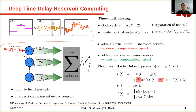Now to the dynamics of the systems. For every layer, we used a nonlinear Ikeda delay system given by the following equations: a sine-squared nonlinearity with a delay term and delay tau_L, and an input coupling with input gain kappa_L and input sequence J_L of t. This input sequence depends on the depth of the layer — the first layer gets the input sequence u of t from the time multiplexing, and deeper layers receive the state of the previous layer. The key parameters we scan are beta_L (the feedback gain) and tau_L (the delay).